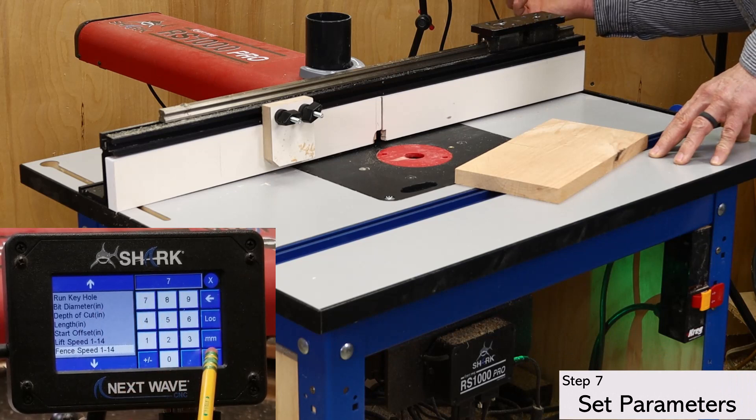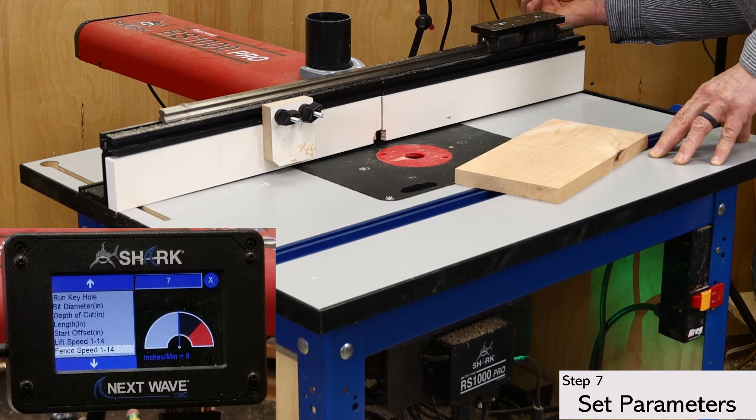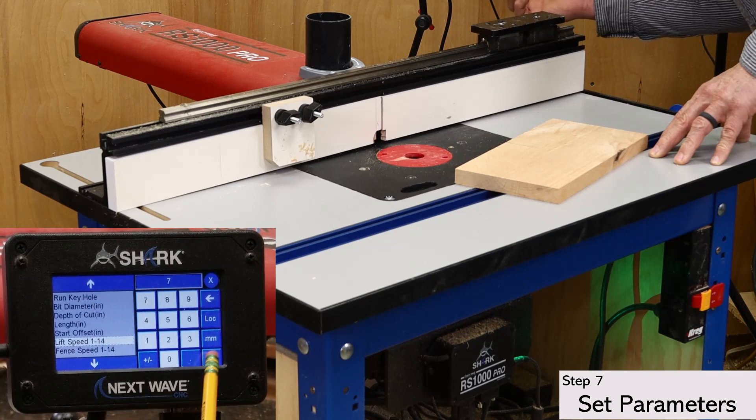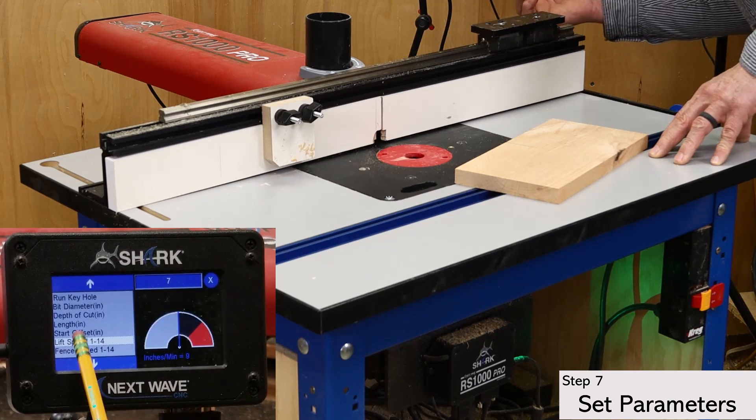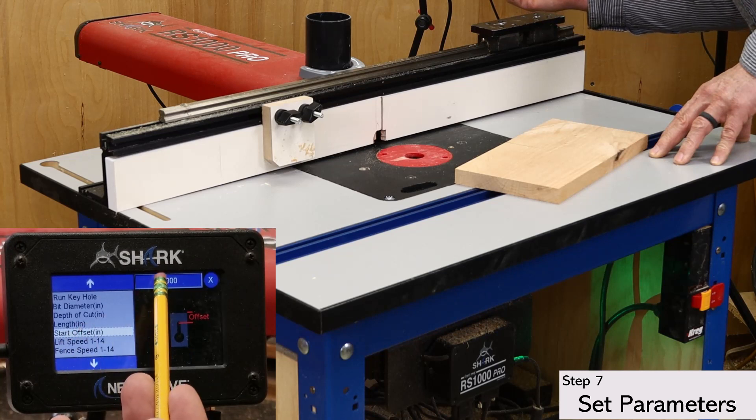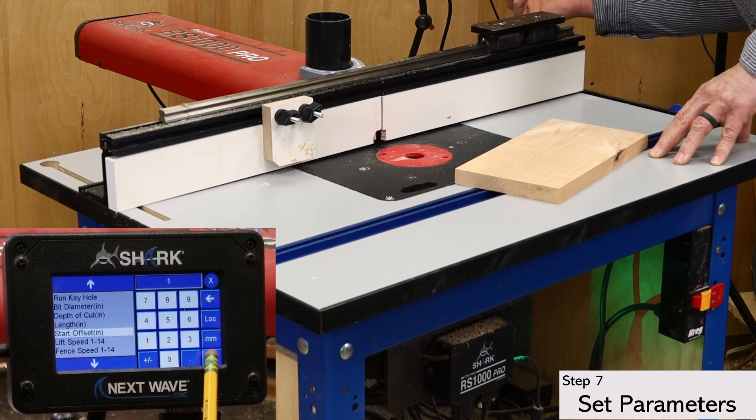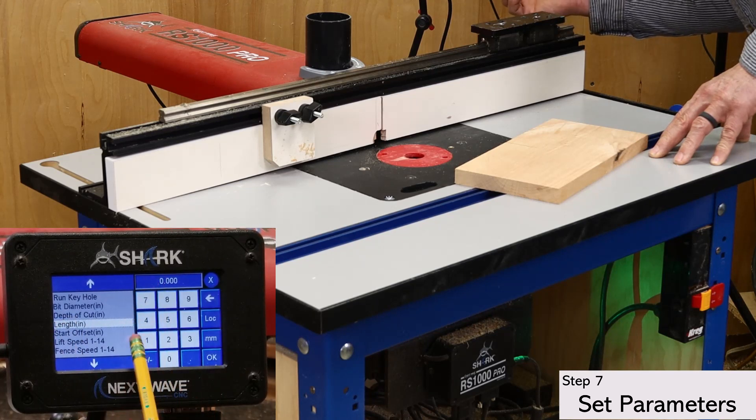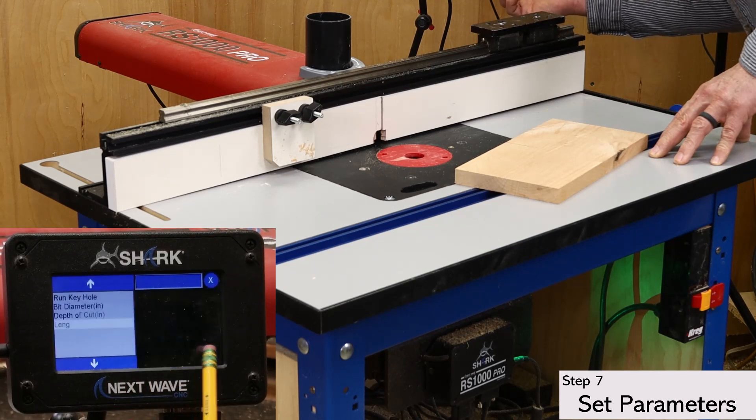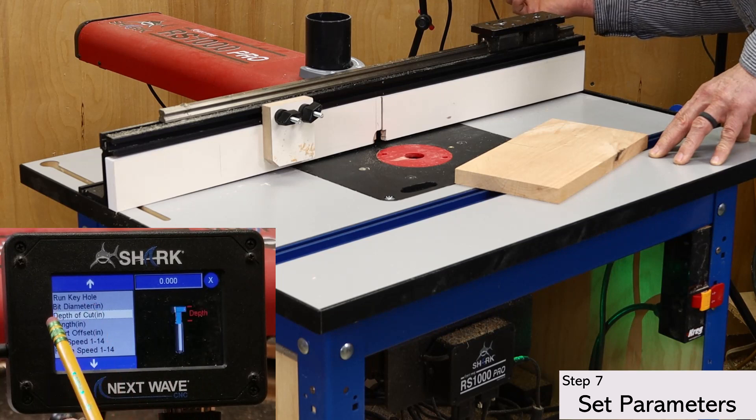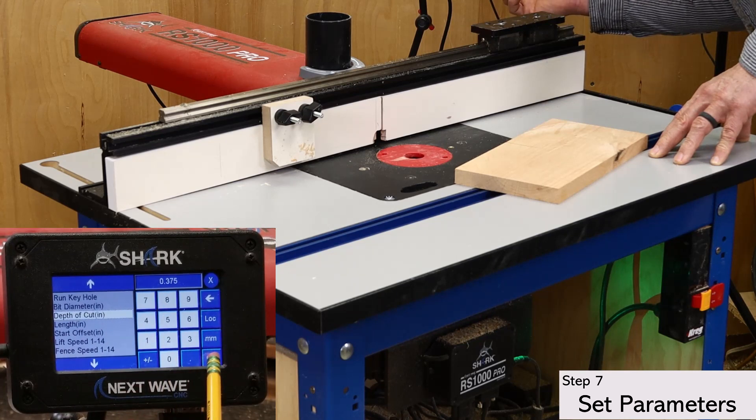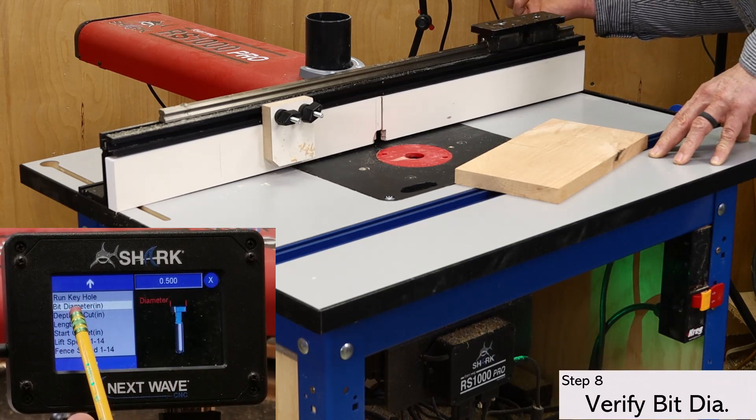This opens a list of parameters that must be set up. Start at the bottom with the fence speed. I'm using medium dense wood, so I'm using a medium setting. I use the same medium setting for the lift speed. For this project, I'm setting the start offset at 1 inch. This is the distance from the edge of the board to the center of the bit. I also use 1 inch for the slot length on this project. I'm setting the depth to 3 eighths of an inch, which works well for this size keyhole bit. Check the bit diameter setting to make sure it carried over correctly from what you entered earlier. I'm now ready to run the app.